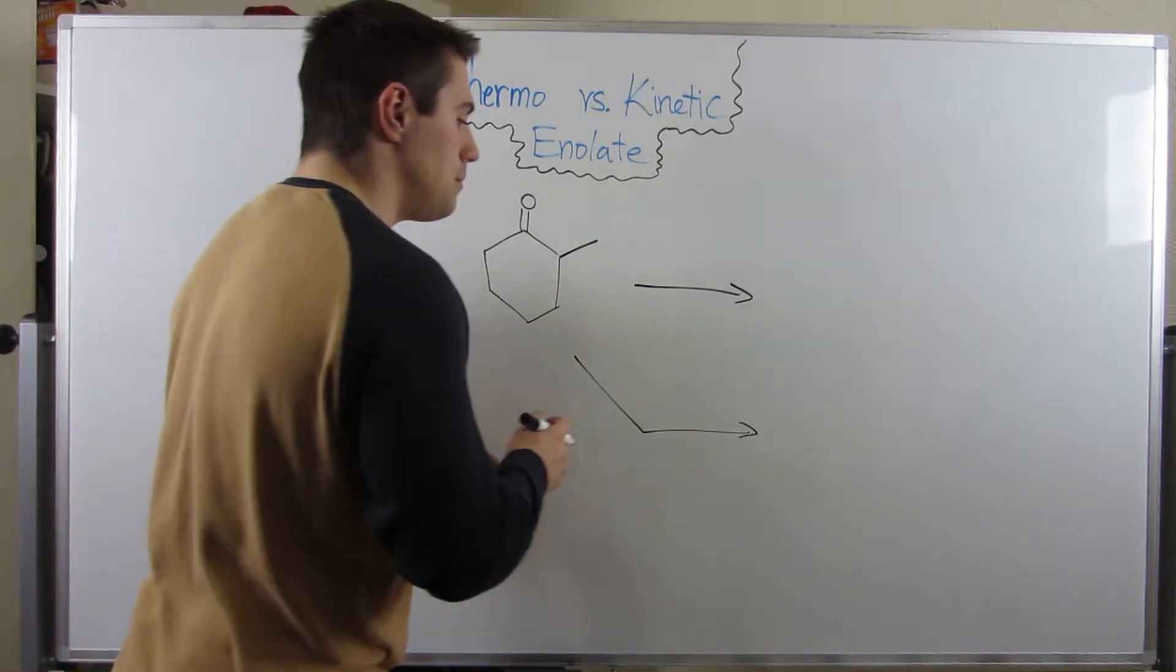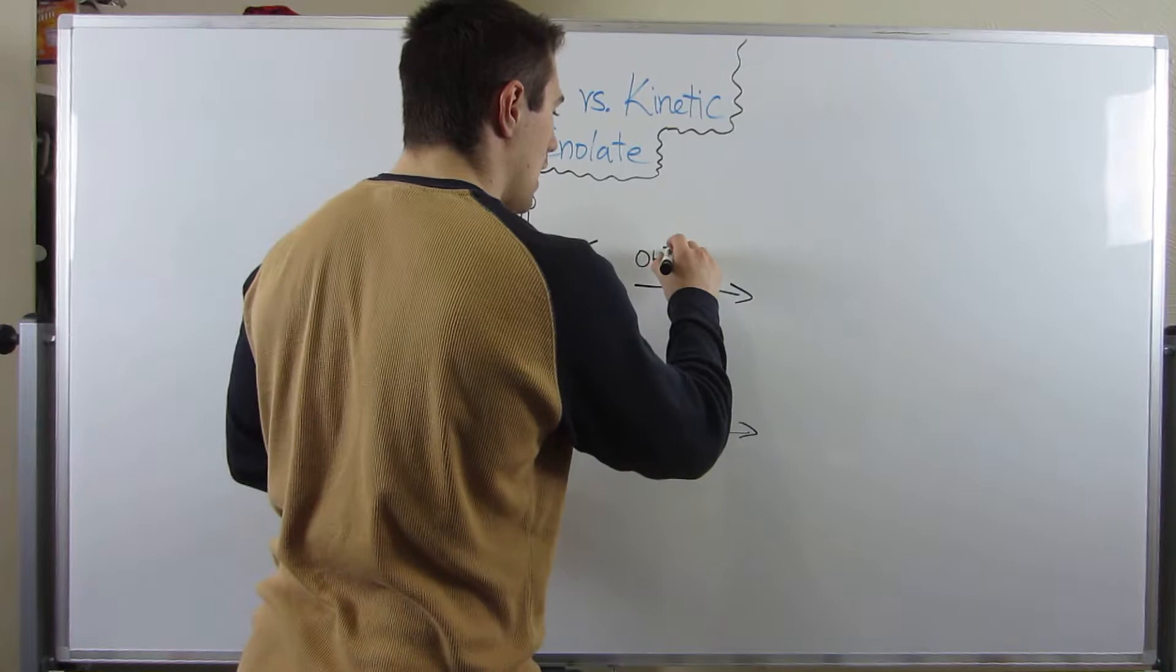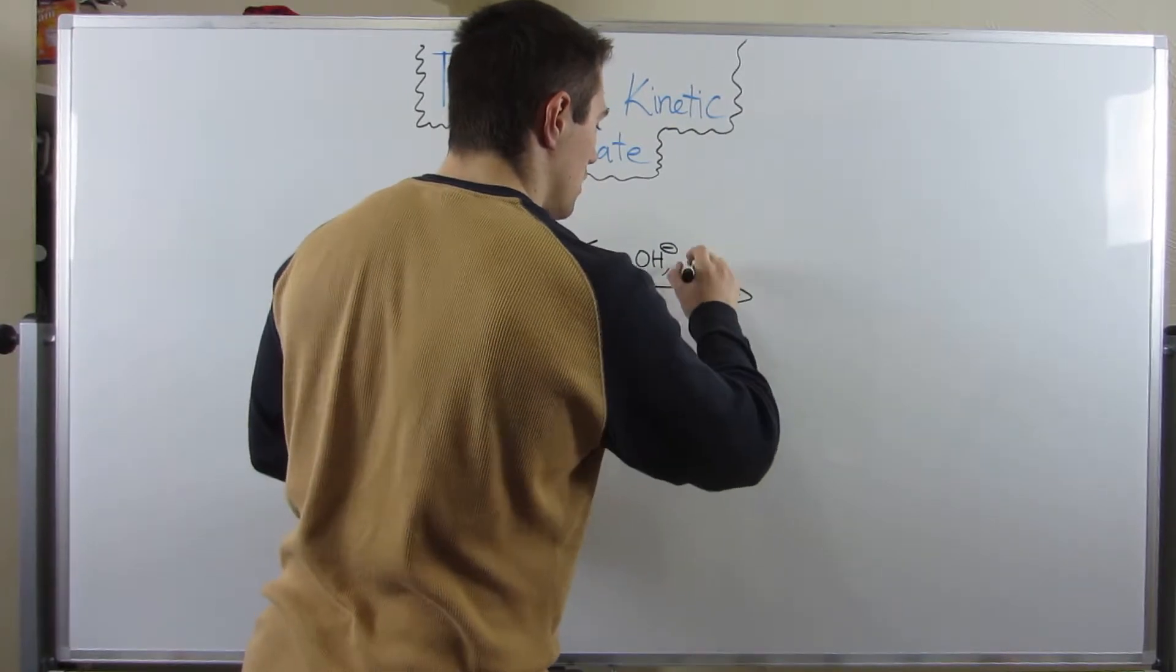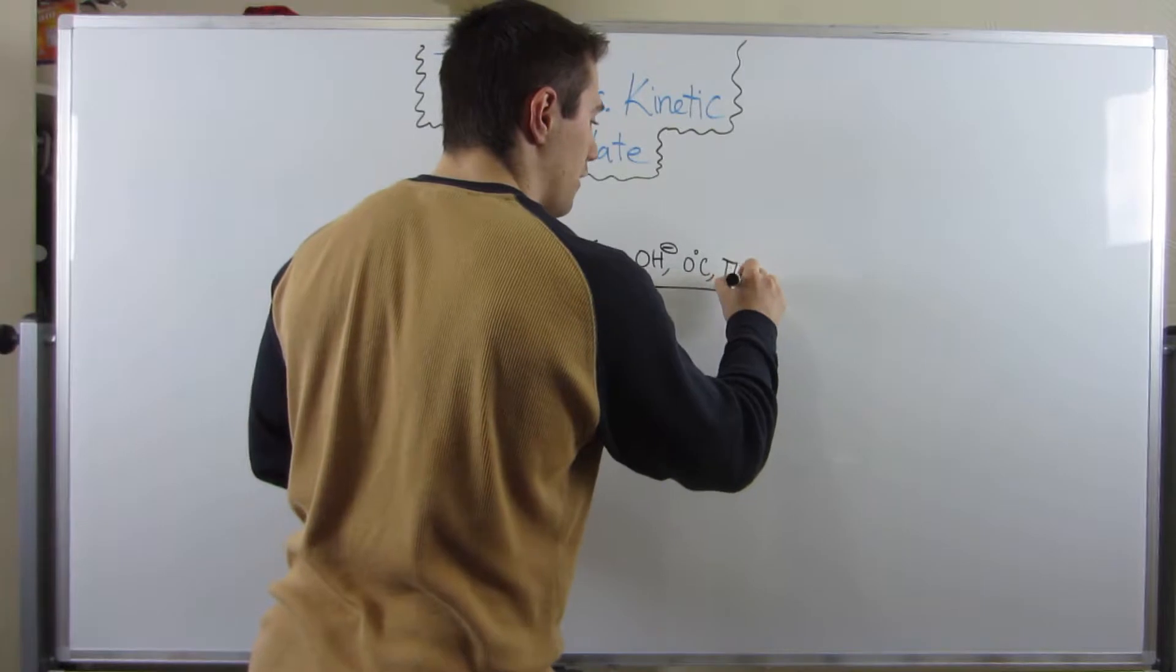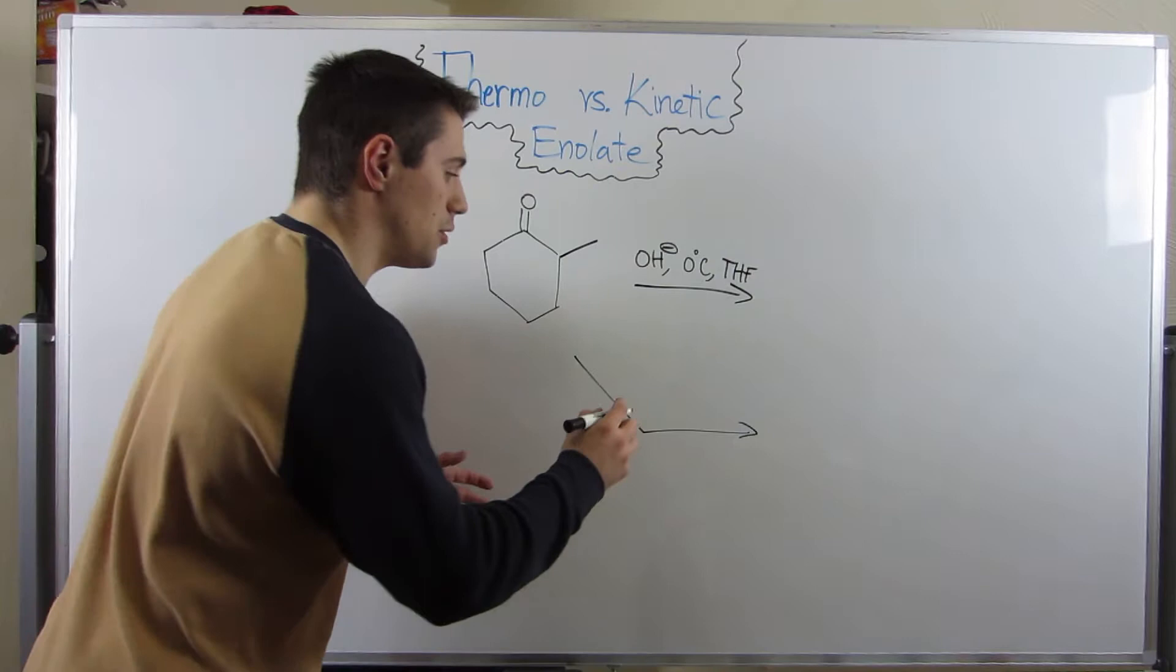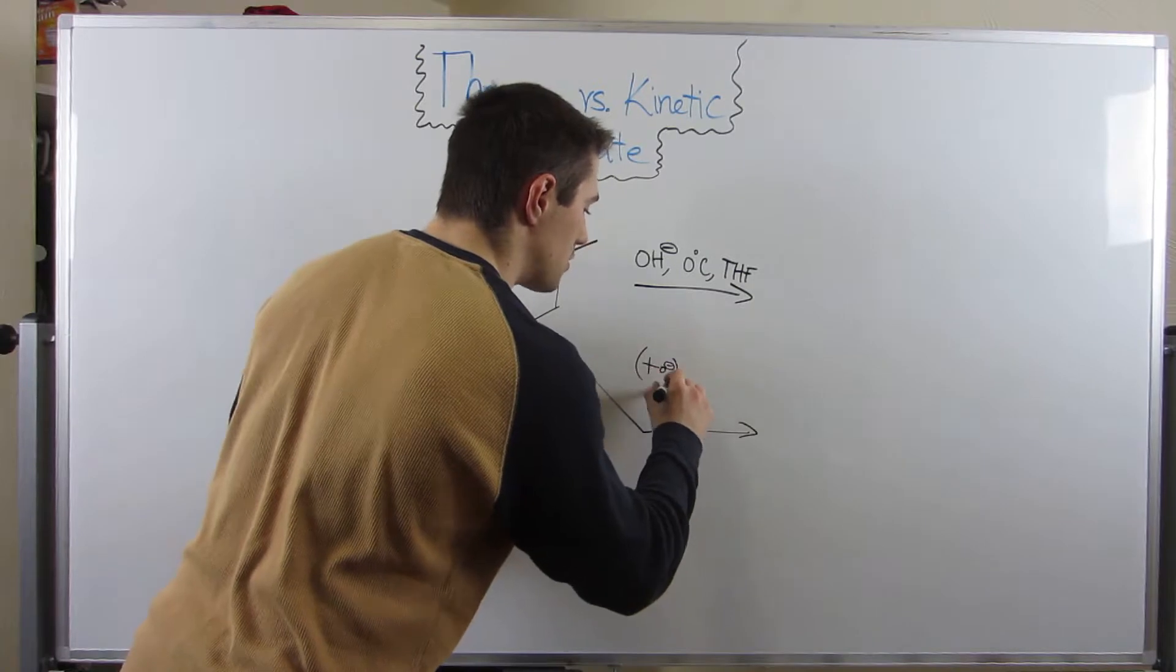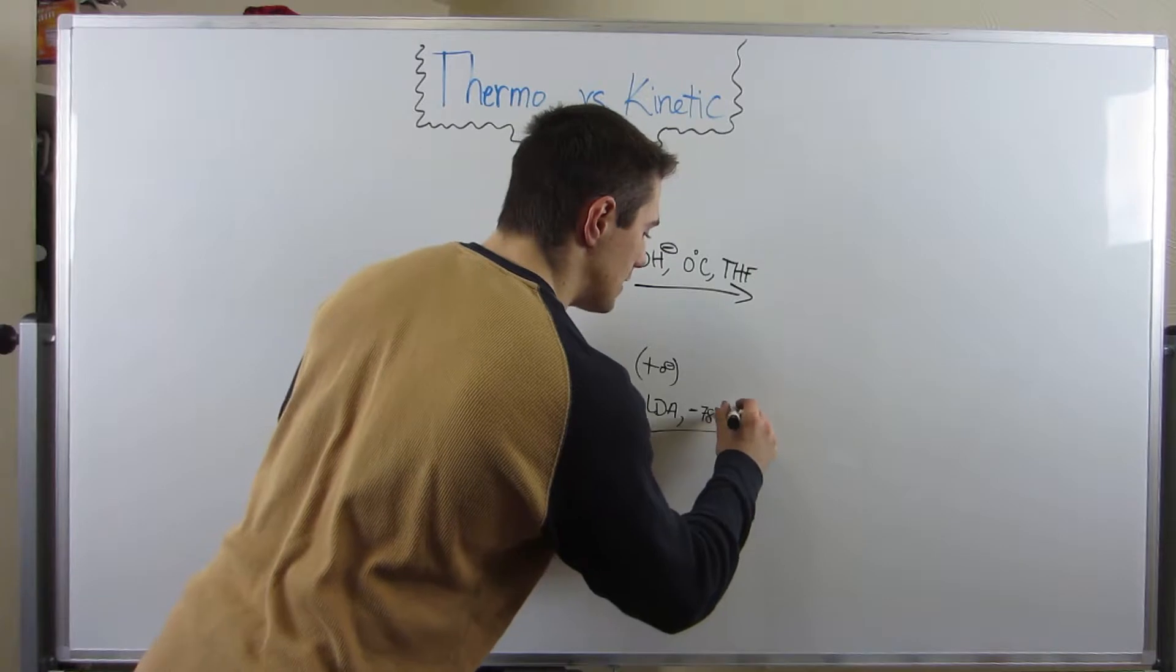So, if I give you hydroxide, zero degrees Celsius, and THF, THF just being a solvent. And another scenario where we use LDA, or if you want to use T-butoxide, negative 78 degrees Celsius, and THF.